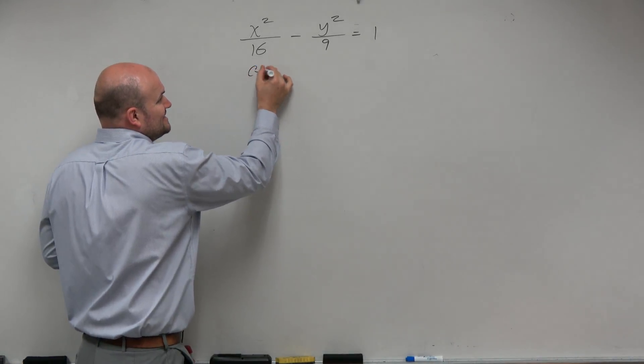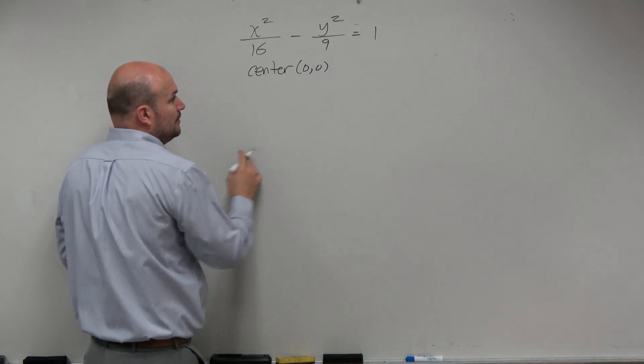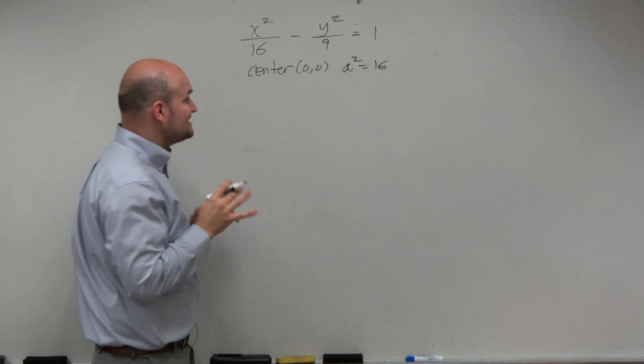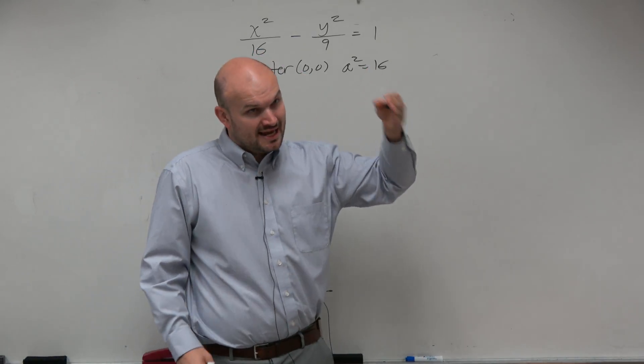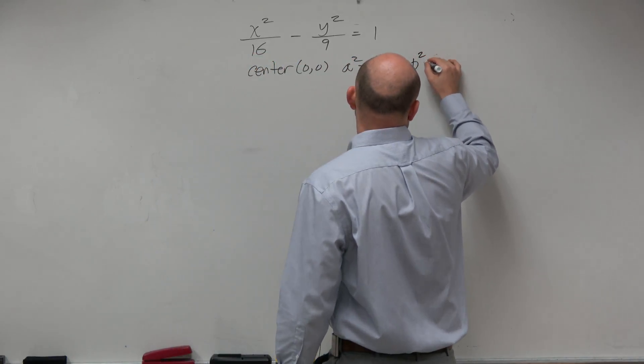We can quickly and easily identify the center as 0, 0. We can quickly identify a squared as 16. It's not a squared because it's the largest, but because the formula is the a squared minus b squared, right? And therefore, b squared is equal to 9.